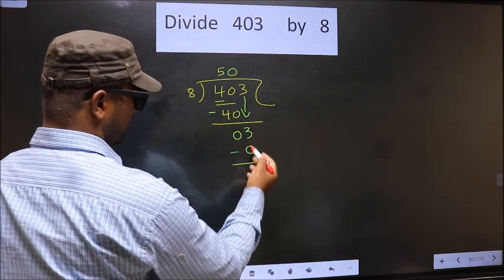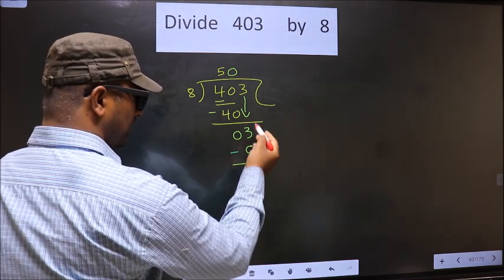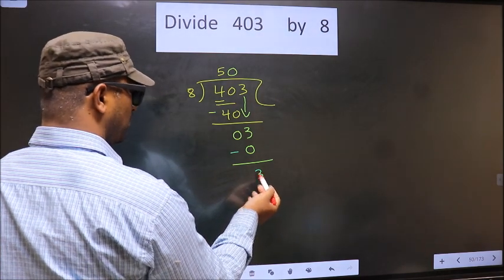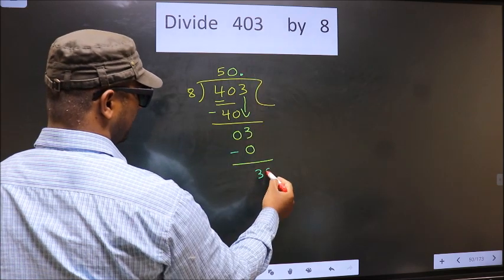Now you subtract 3 minus 0, that's 3. Over here we did not bring any number down, and 3 is smaller than 8, so now you can put a dot and take zero here.